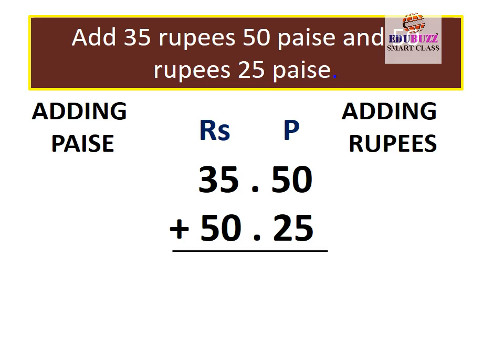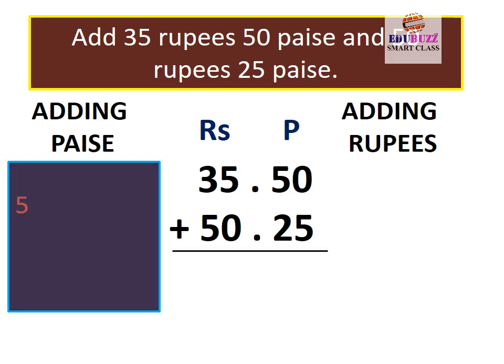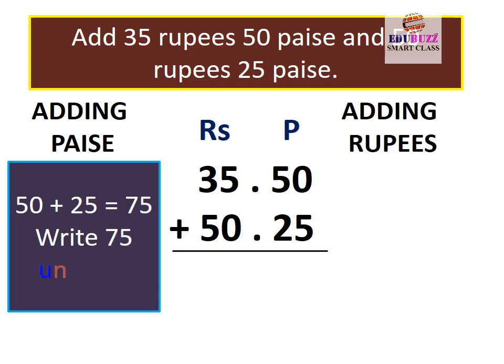Adding paise: 50 plus 25 is equal to 75. Write 75 under P.